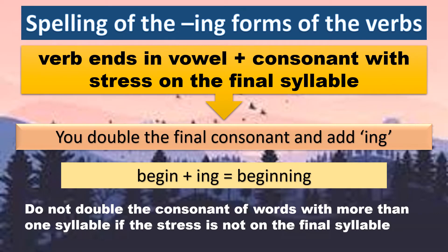This is an extra rule for you. If the verb ends in vowel and consonant with stress on the final syllable — now we're talking about more than one syllable — you double the final consonant if the stress is on the final syllable. For example, begin — you stress on 'gin', so you double the N: beginning. Otherwise, if the stress is not on the final syllable, like remember — you stress 'mem', not 'ber' — so you cannot double the last letter.